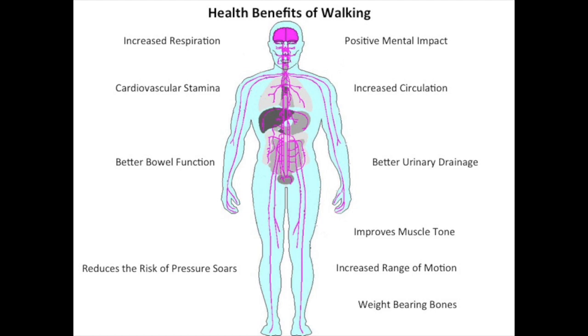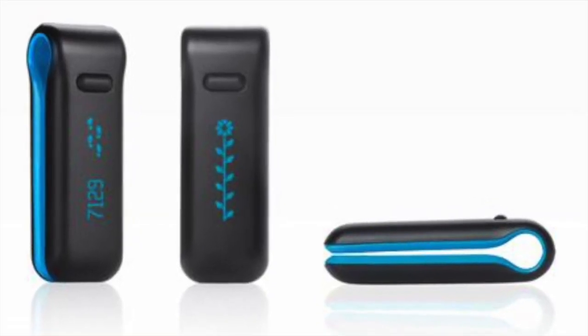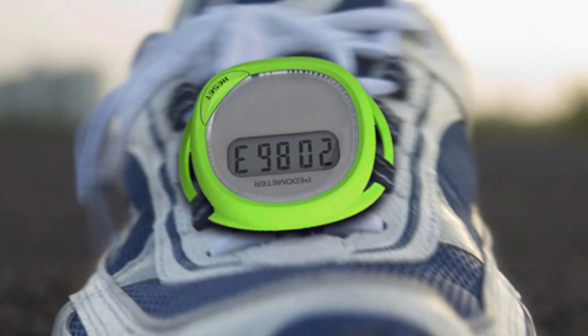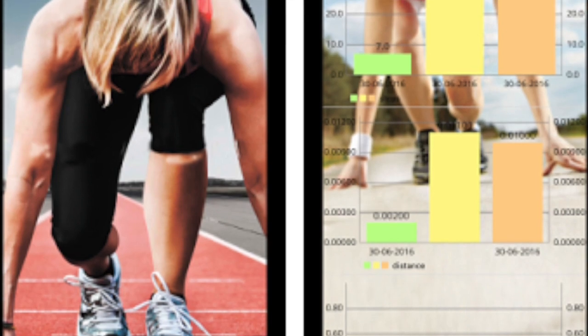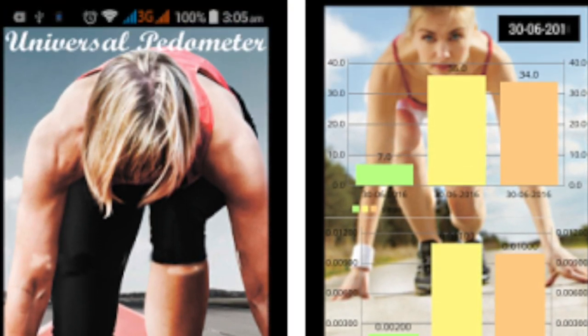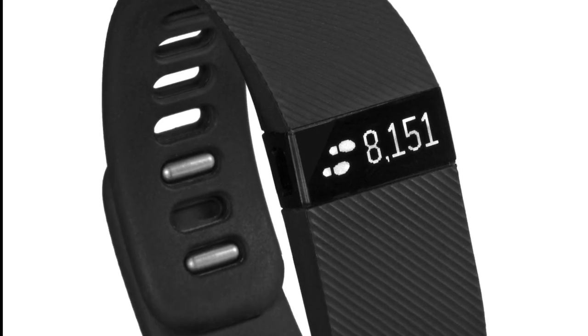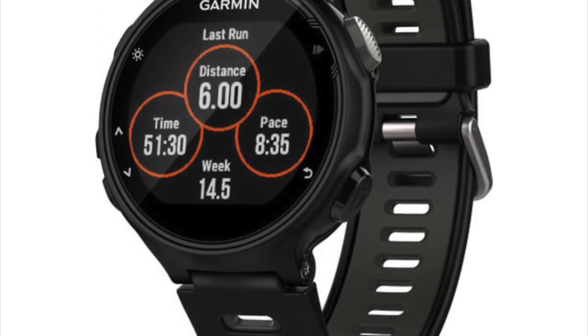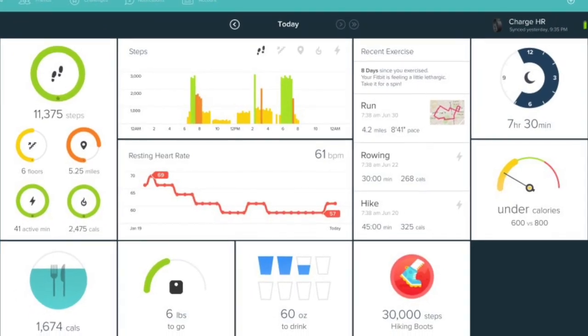Pedometers exist in many forms and can be worn on your wrist, on a belt clip, on a shoe, or in your pocket. A typical smartphone is also capable of counting steps and measuring distance. You might be familiar with popular pedometers like the Fitbit, Jawbone, and Garmin watch. Let's take a closer look at how this technology works.